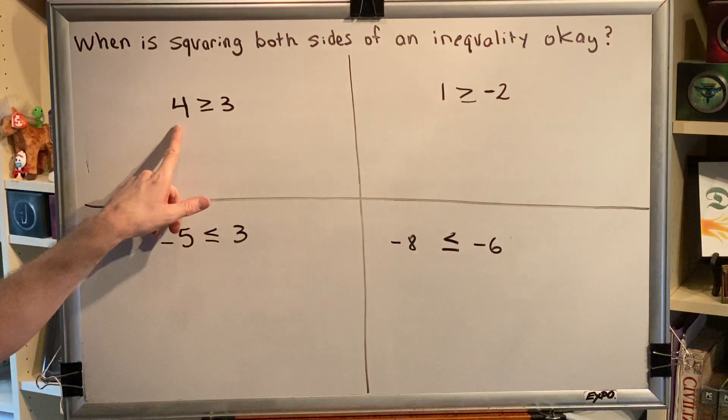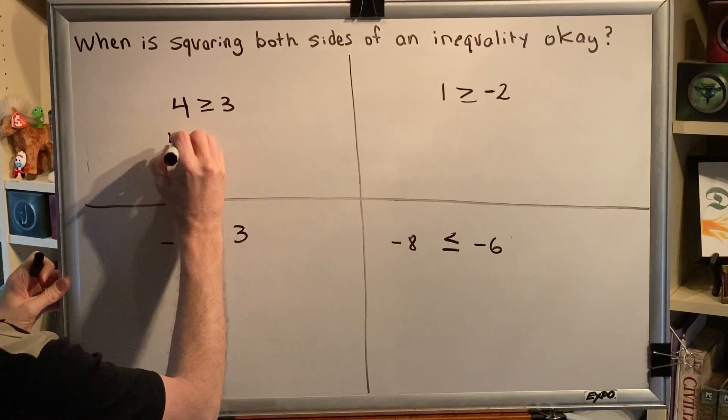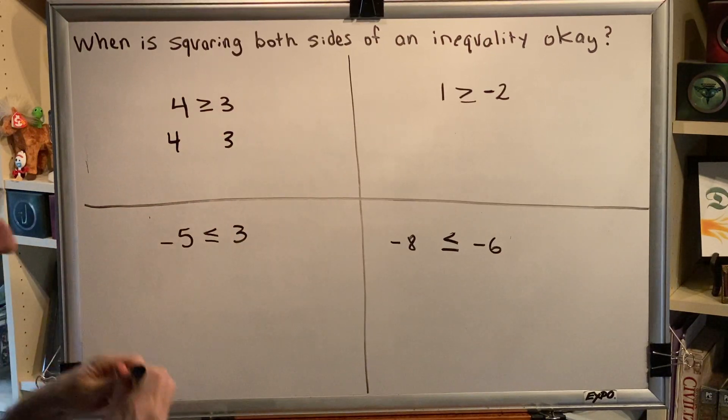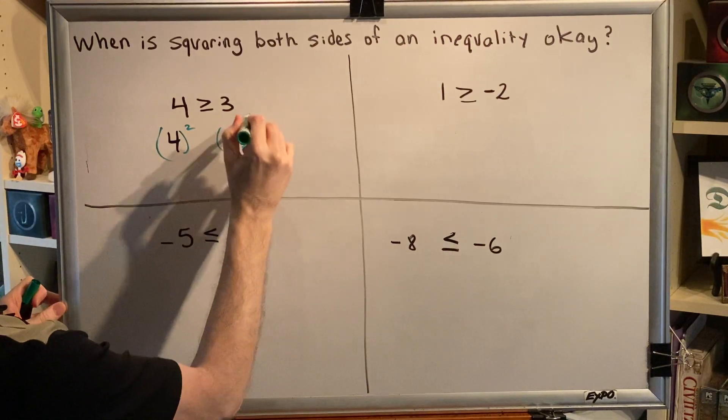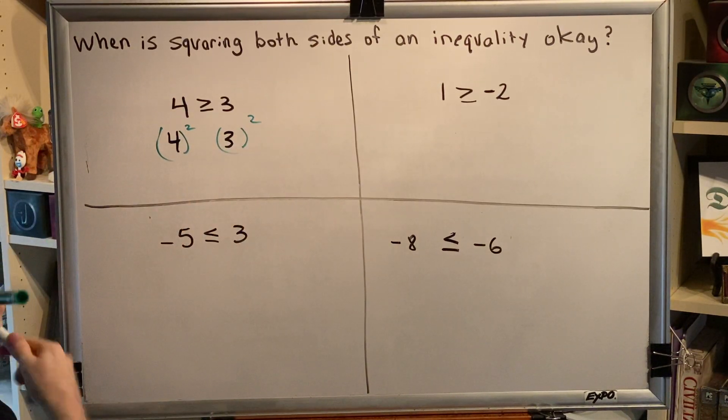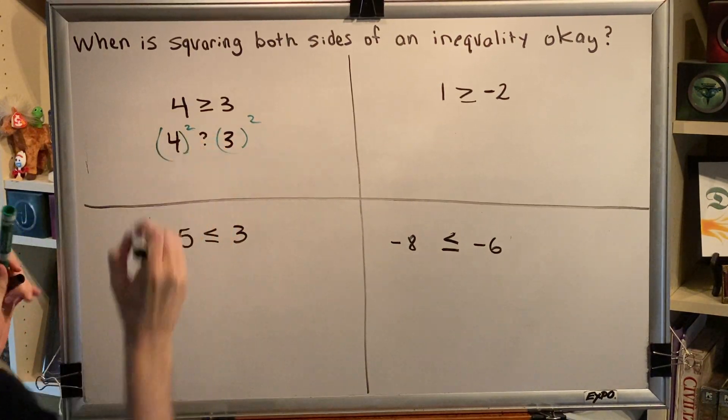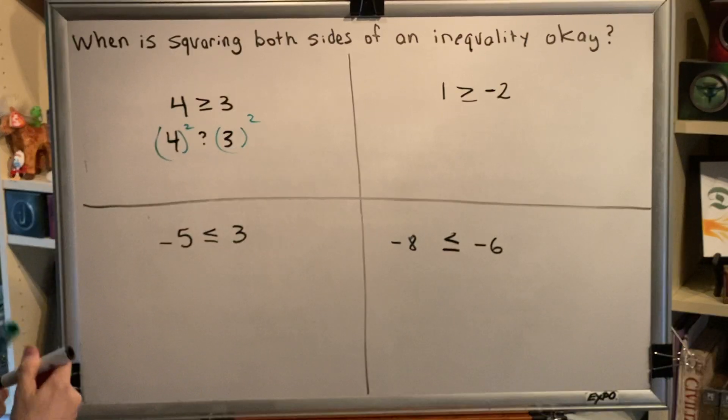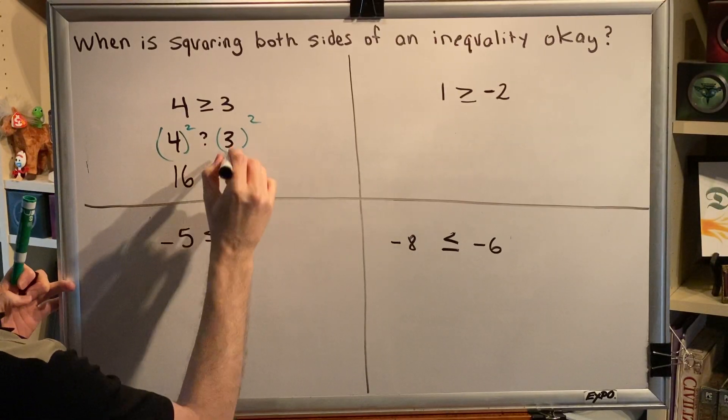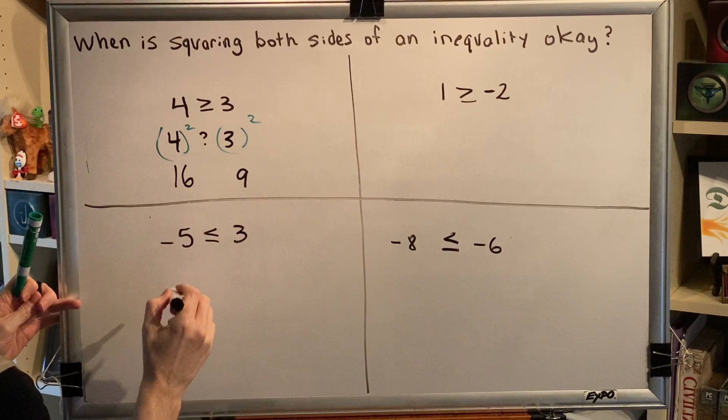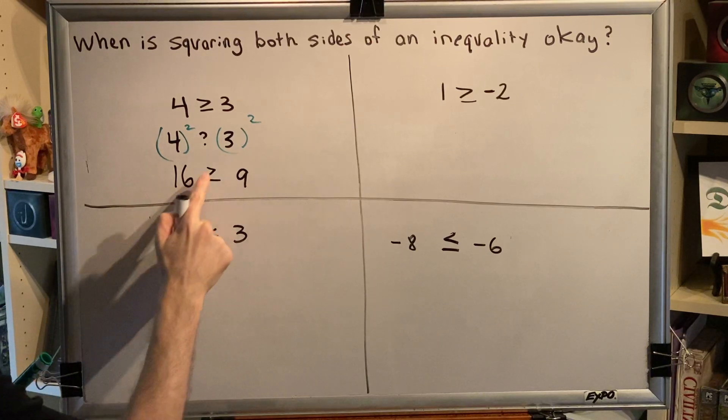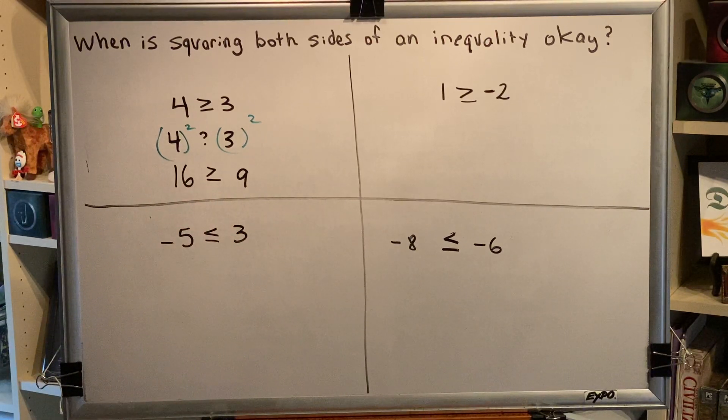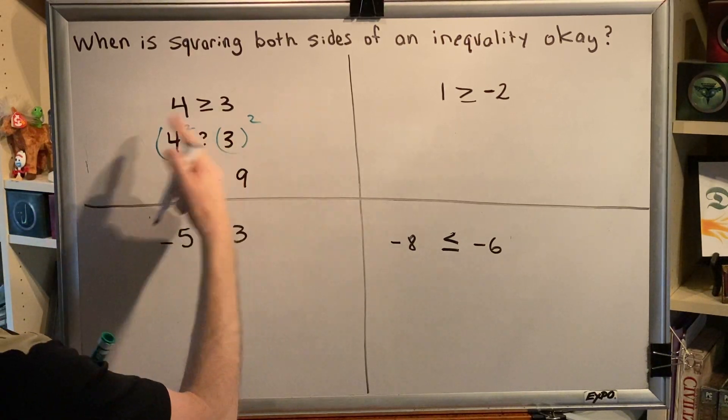Let's begin by looking at this: four is greater than or equal to three. If we square both sides then on the left we would have four squared and on the right we would have three squared, and what we're trying to investigate is what sort of inequality symbol should go in between there. Well, four squared is sixteen, three squared is nine, so it appears that in this particular instance we would keep the inequality symbol and sixteen really is greater than or equal to nine. So this seems to suggest some evidence that if you square both sides the sign should not change.